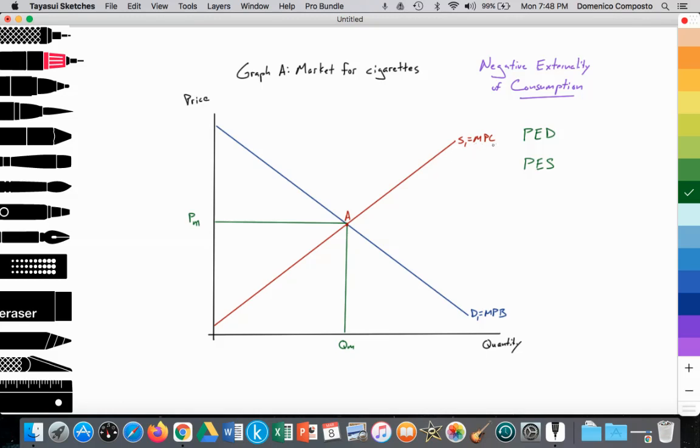And we have our downward sloping demand curve by the household for cigarettes labeled marginal private benefit. Now, let's keep in mind that the elasticity, even though I haven't drawn the demand curve to be vertical, we're going to just keep in mind that the PED for cigarettes is less than one because of its addictive quality.